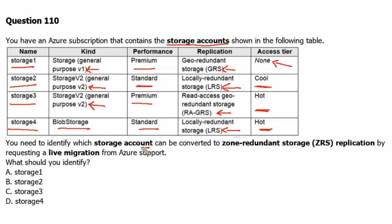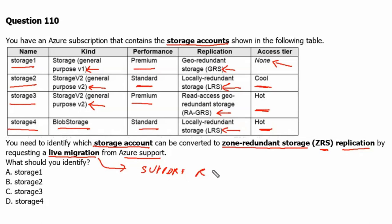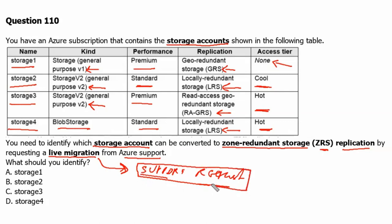You need to identify which storage account can be converted to zone-redundant storage, or ZRS replication, by requesting a live migration from Azure support. Live migration is a support request to Microsoft and it doesn't need any downtime for the migration. We need to see which account can be migrated using the live migration or Microsoft support request.